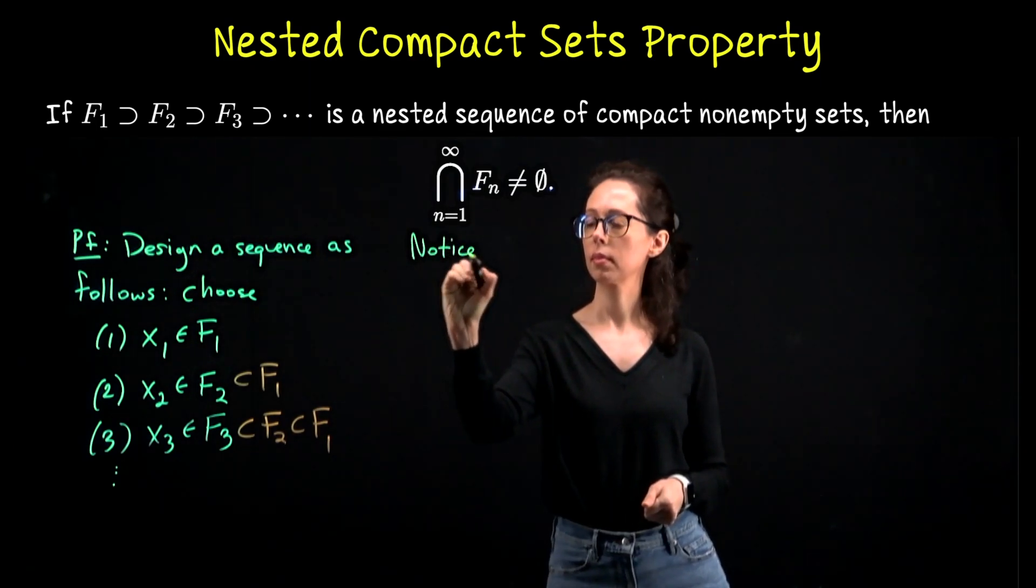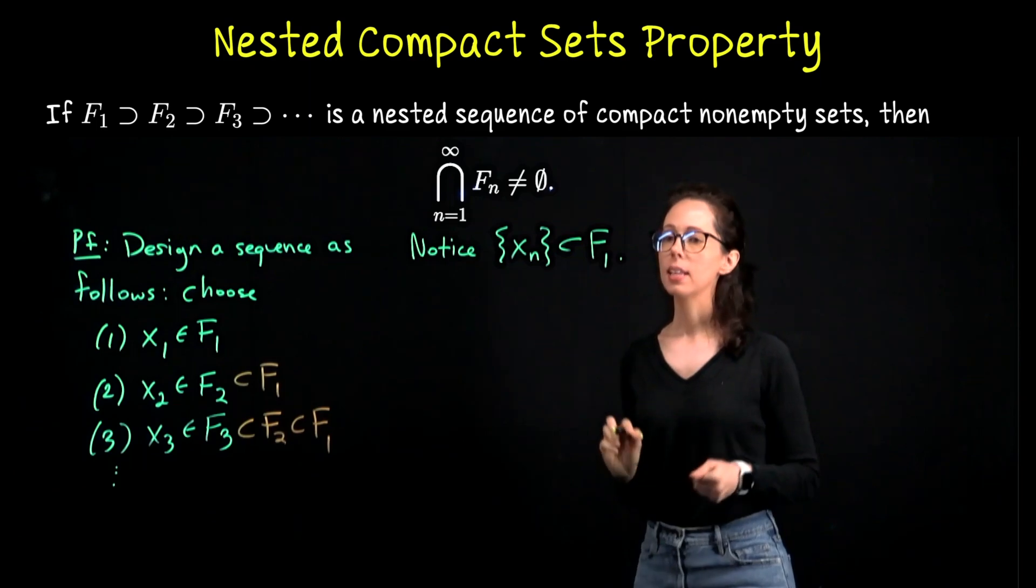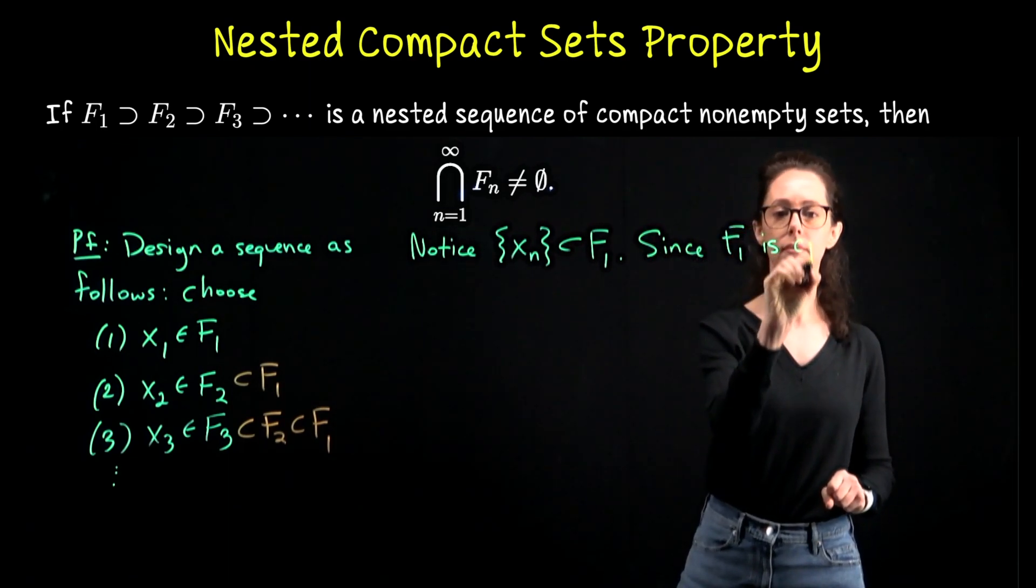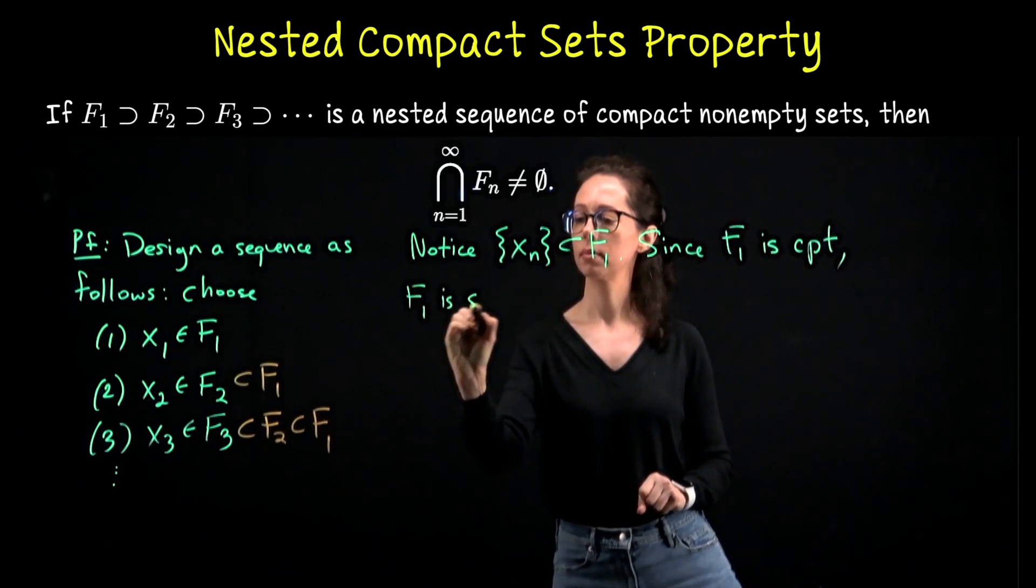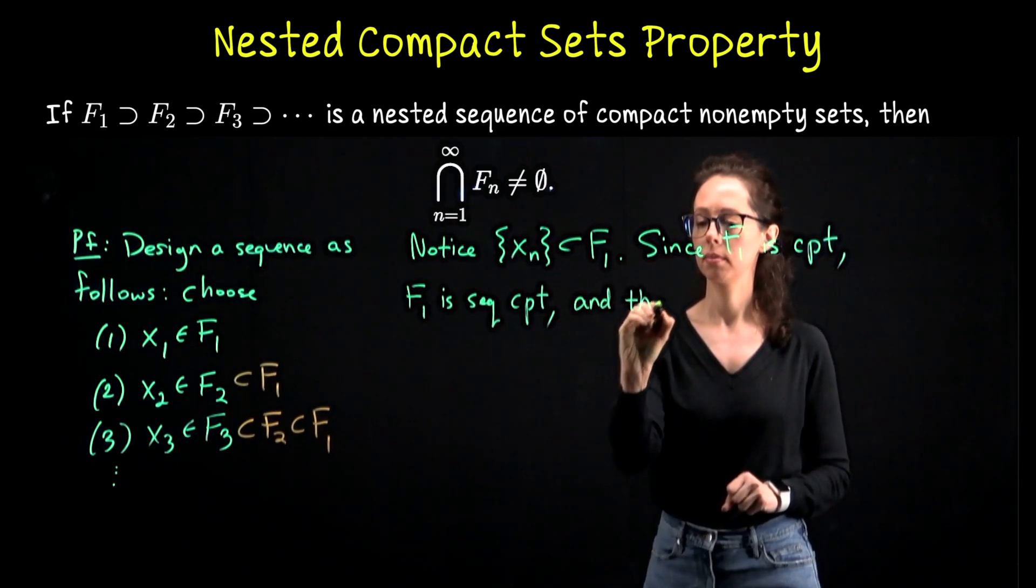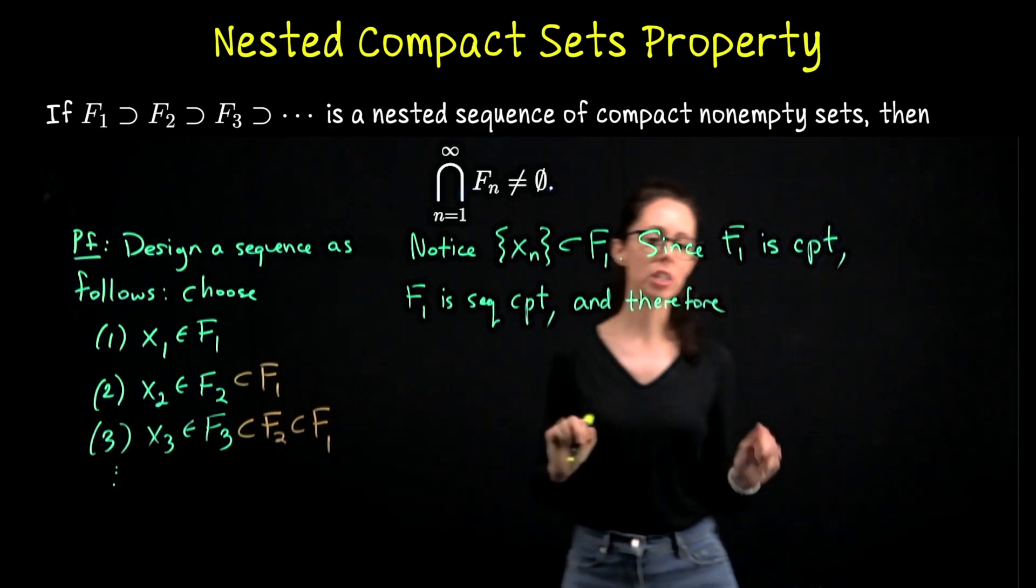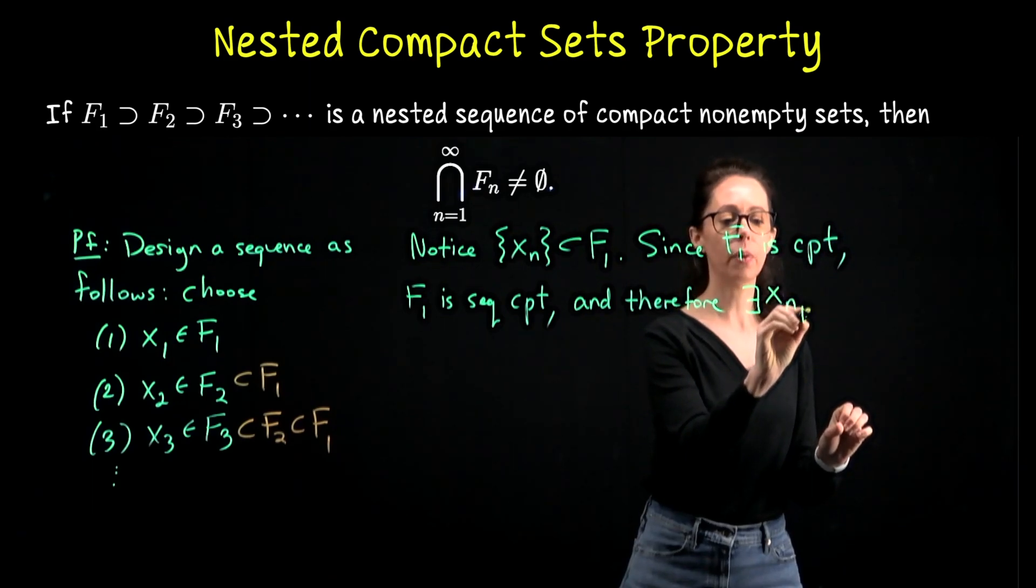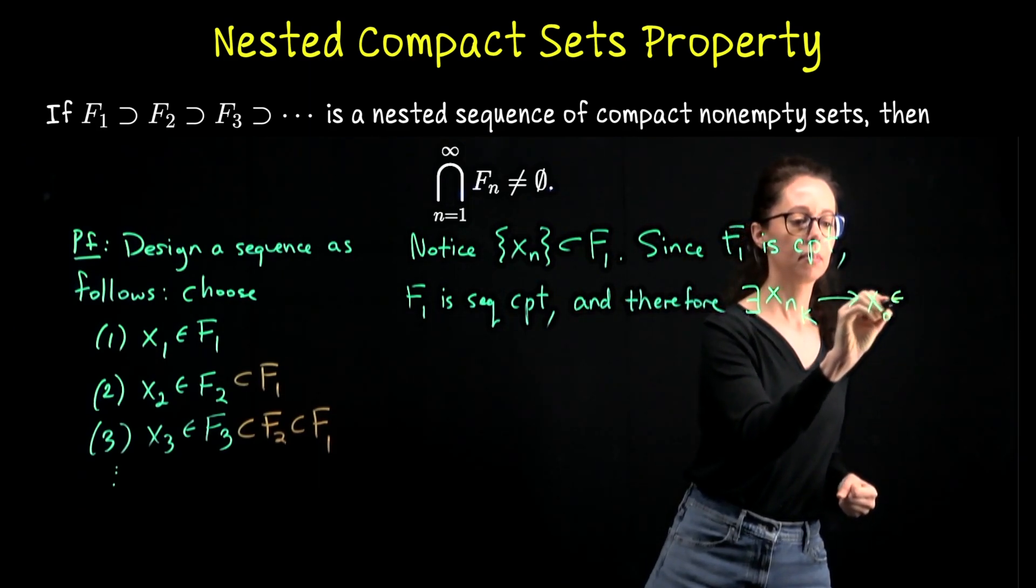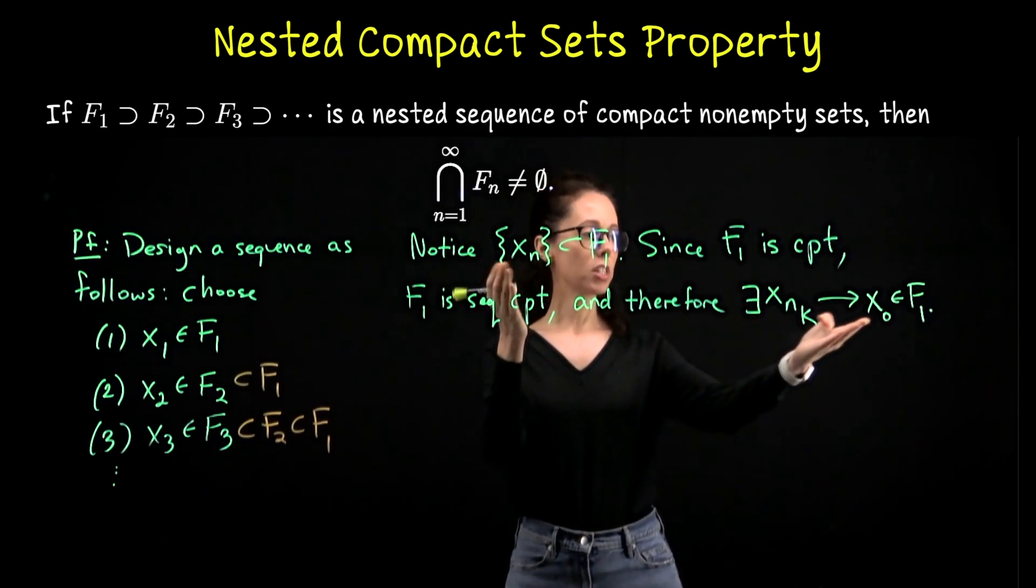Notice this sequence lives in F₁. Since F₁ is sequentially compact because it's compact—since F₁ is compact, it's sequentially compact—and therefore, this sequence has a subsequence which converges to a limit which also lives in F₁. What I'm going to do is very shorthand. I'll say there exists a subsequence which converges to a limit in F₁. So since F₁ is compact, it's sequentially compact and therefore this sequence yields a subsequence which converges to a limit which also lives in F₁.